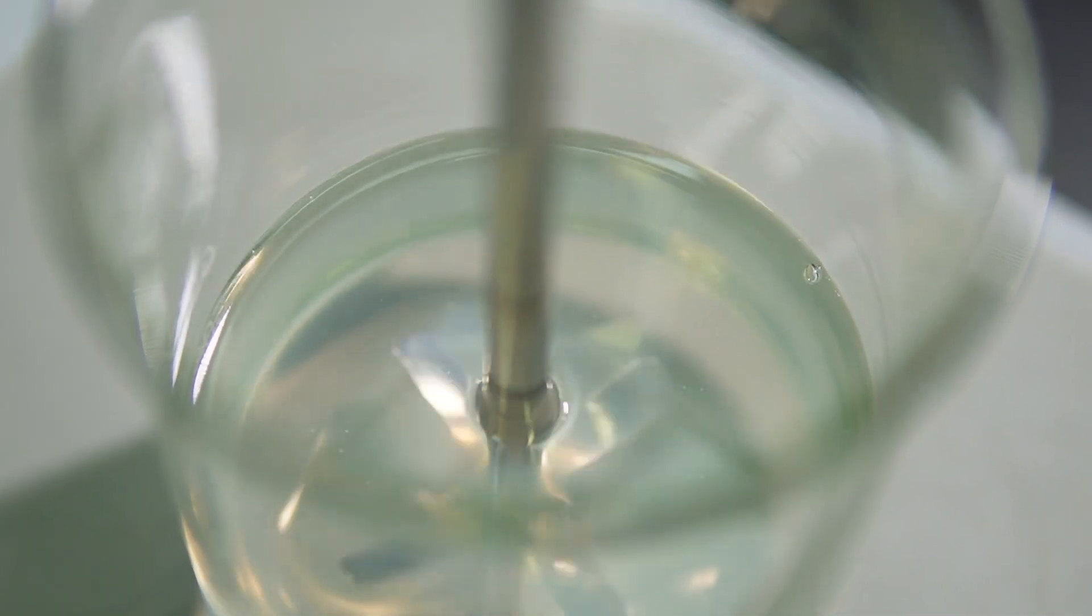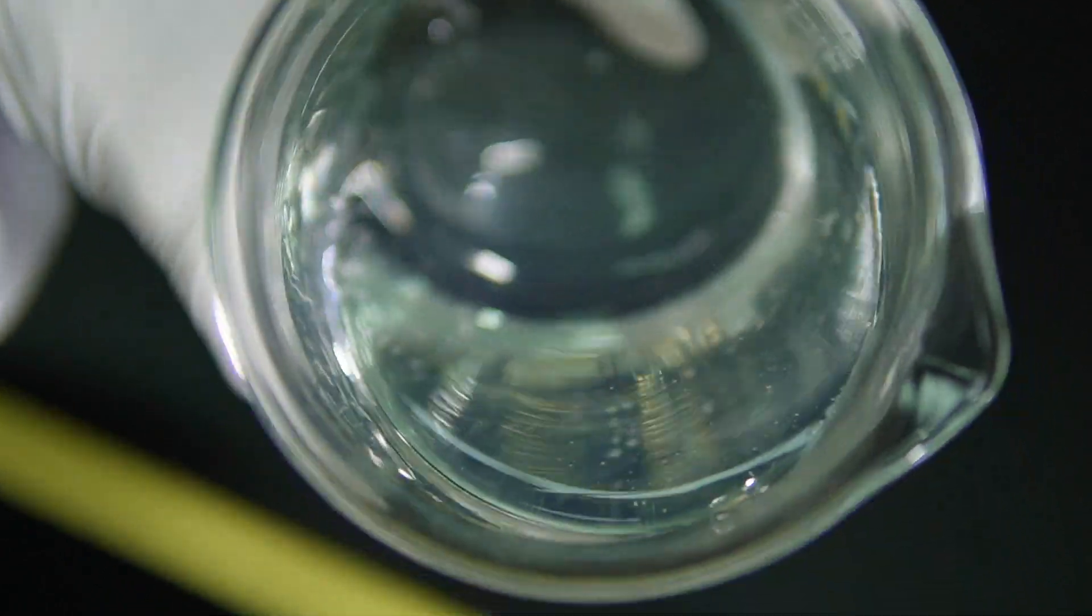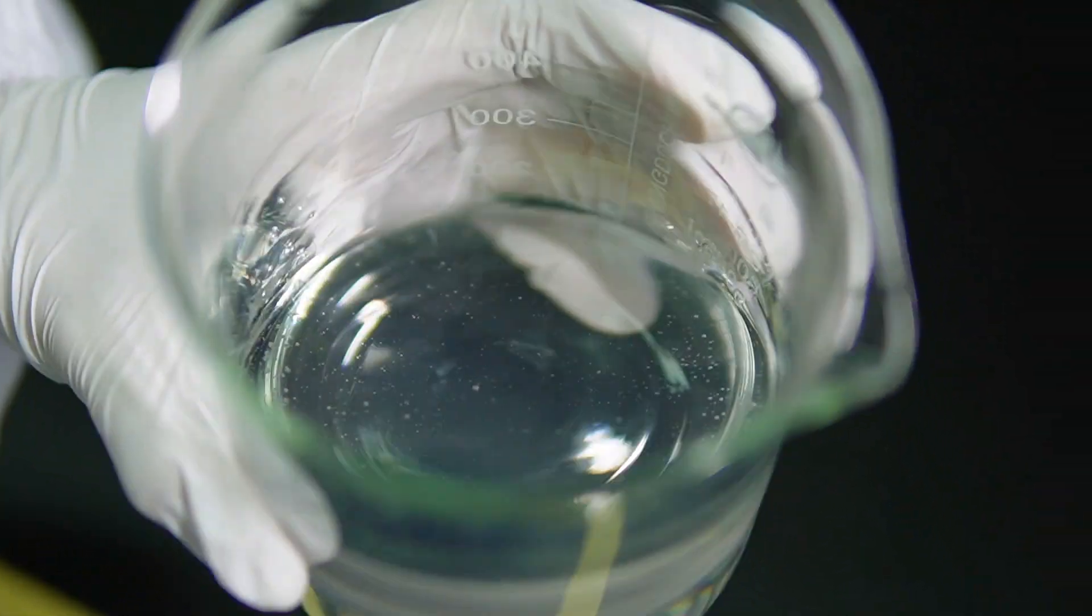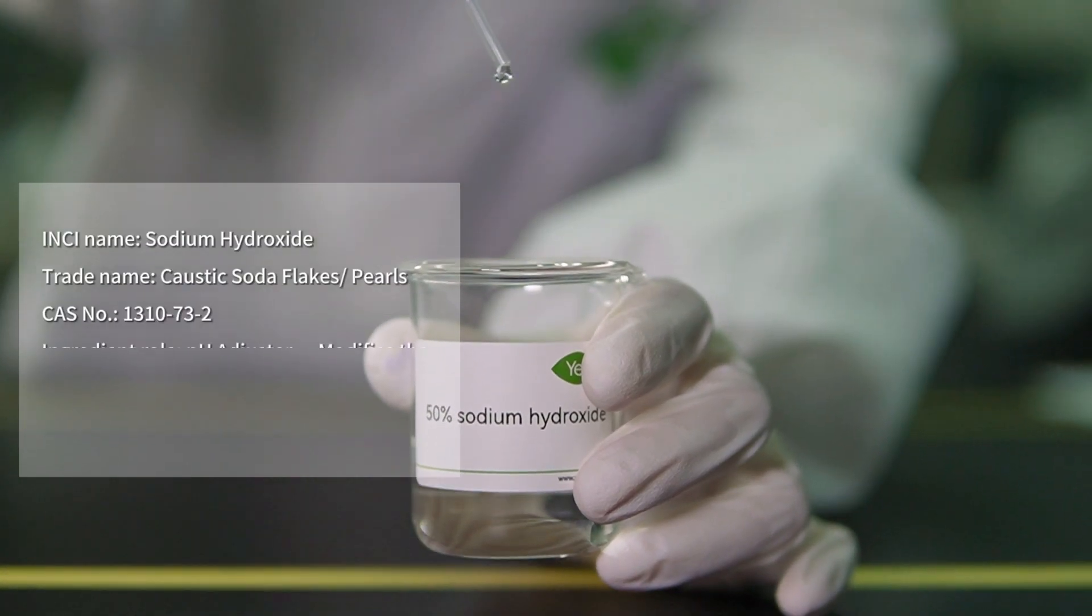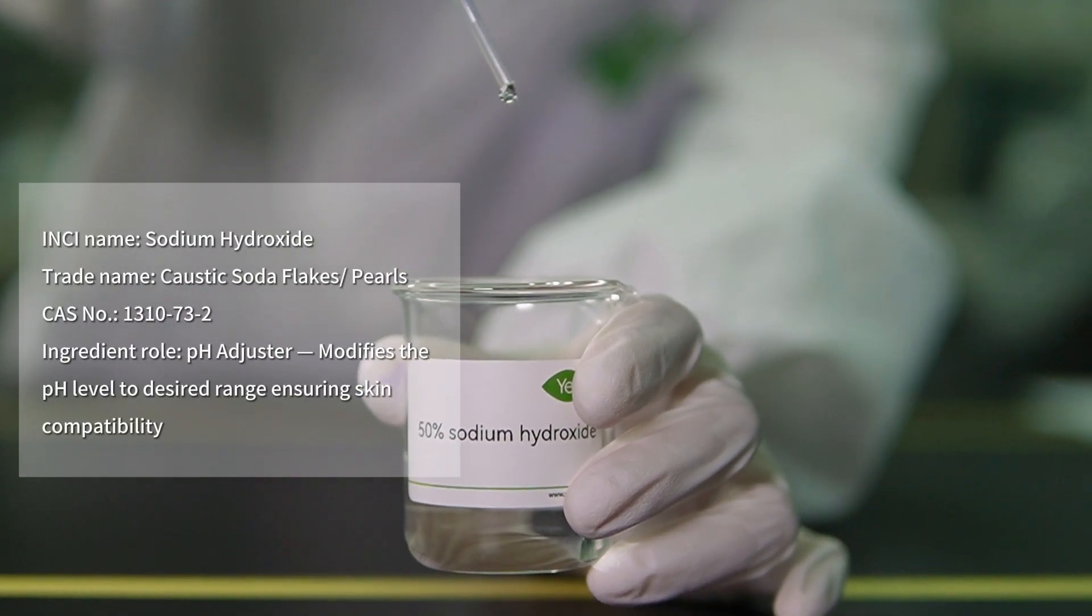And while we're doing all this, we keep the slurry stirring at a steady medium speed. It's a bit like baking, you've got to get the mix just right. As we delve into Phase E, it's all about perfecting the details and adding that final flourish.